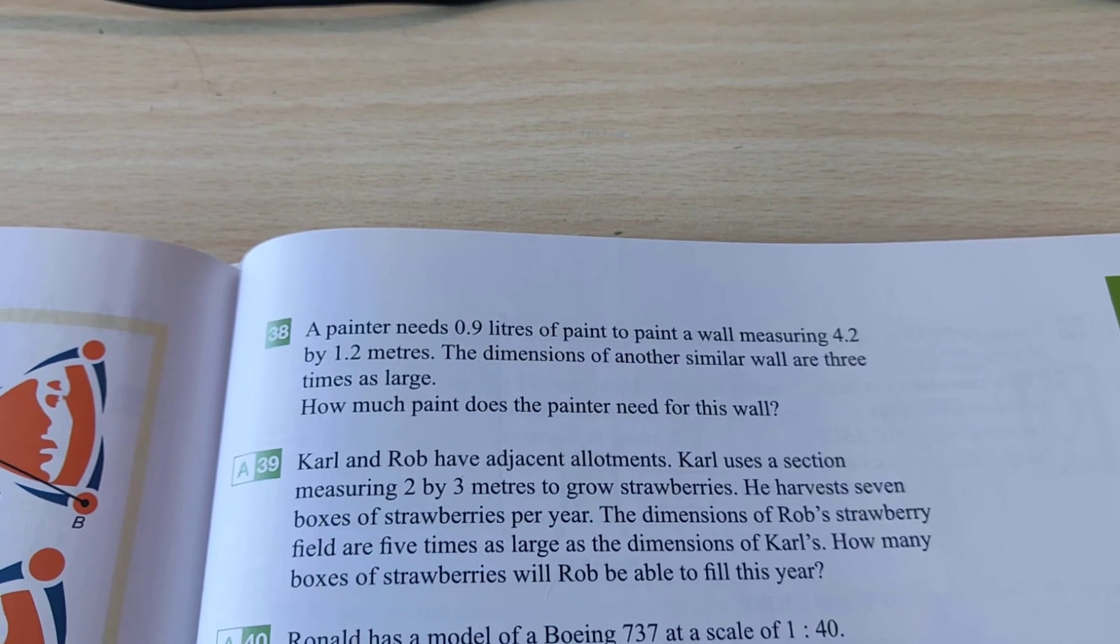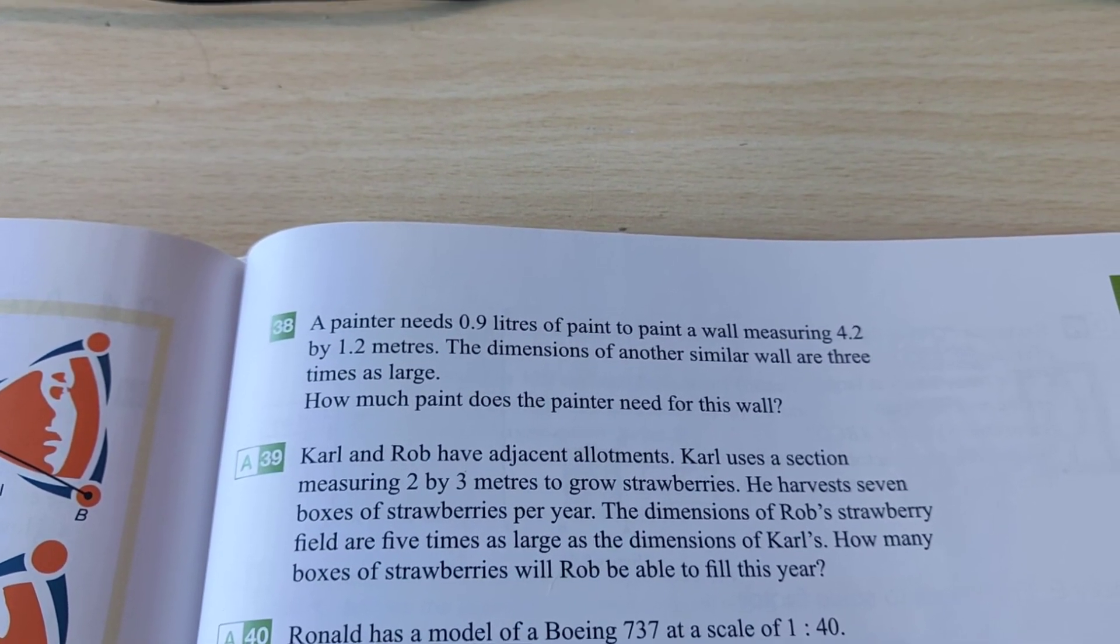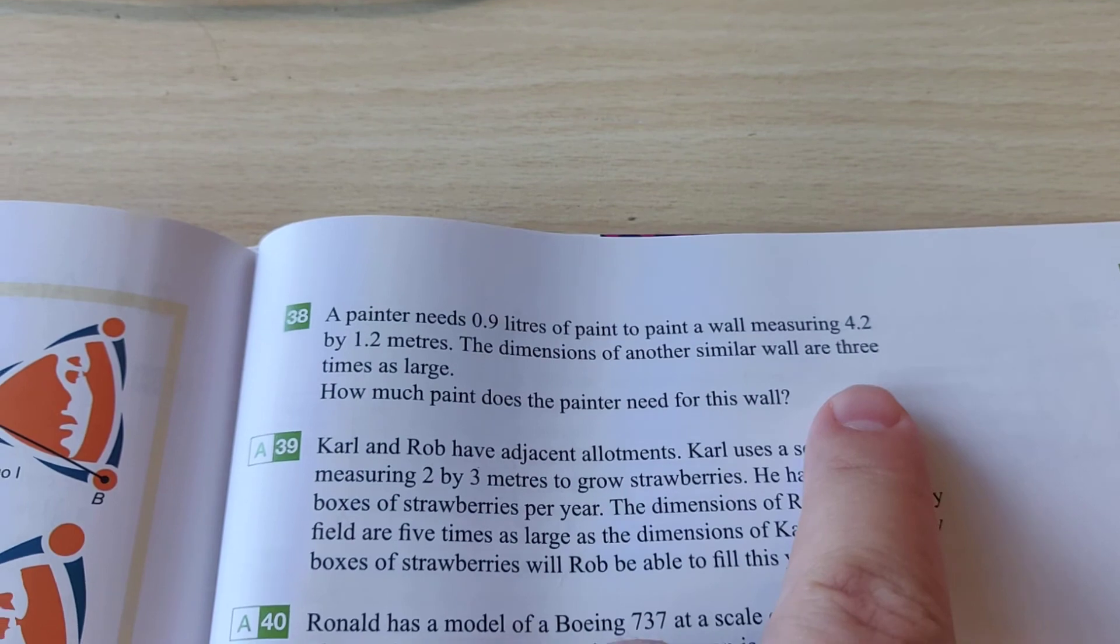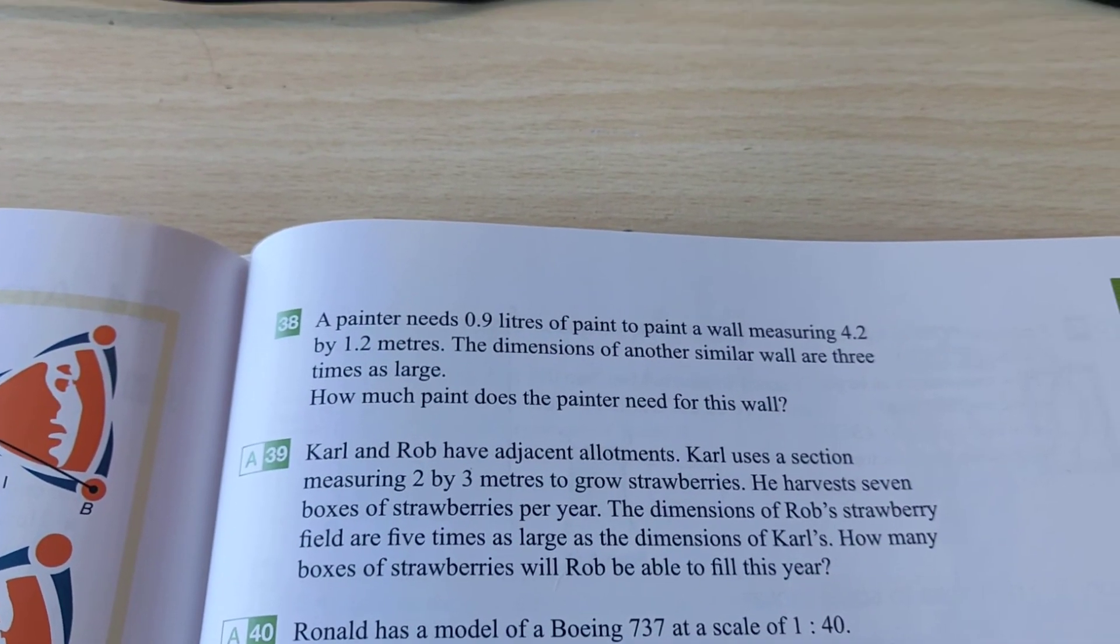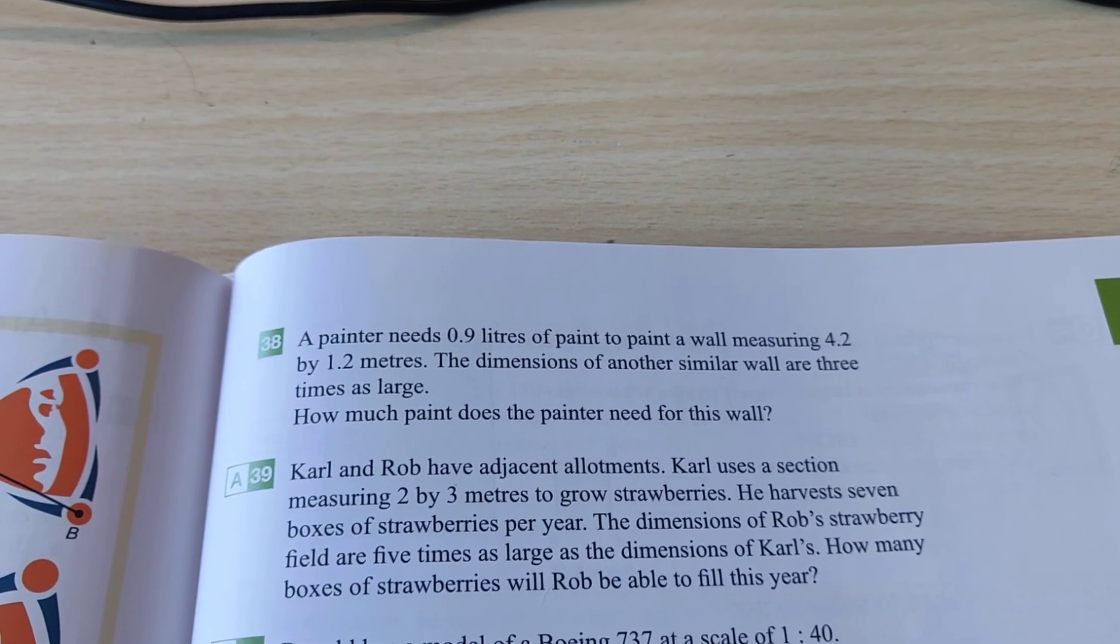So if you want to know how much paint you need for the new wall, for the bigger one, you have to do it times 3, because 3 is the scale factor. But 3 you have to do squared, because it's about an area.